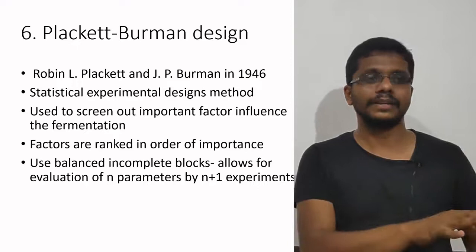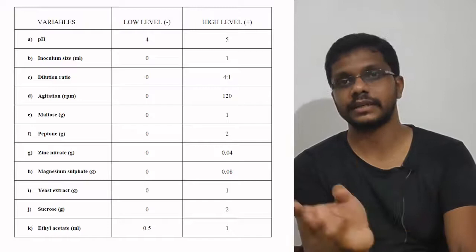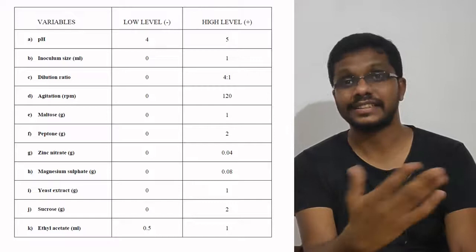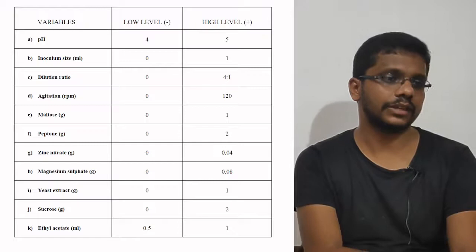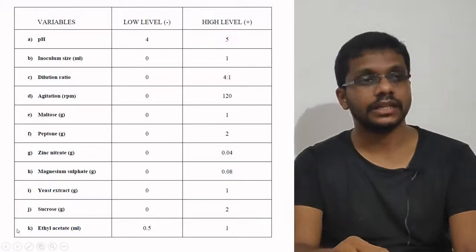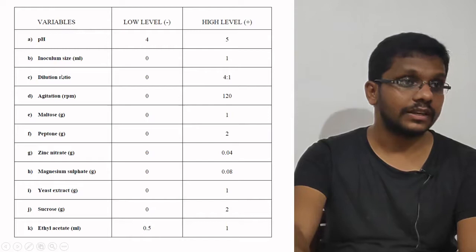Let me show you one experiment we did as part of a project. In this process, we wanted to know what factors affect alcohol production by Saccharomyces. The medium was basically a waste product of the ice cream industry. We focused on the most important parameters, identifying 11 different parameters which may have an effect on the production of alcohol — including pH, inoculum size, and other components.